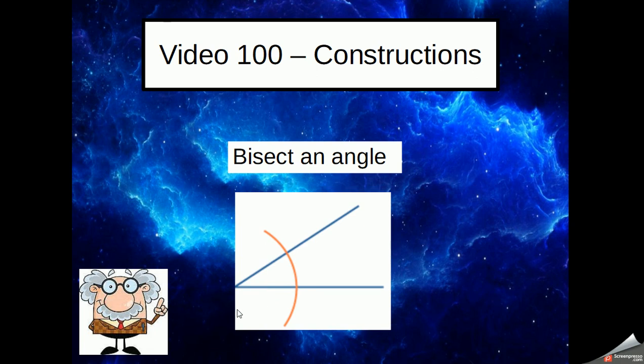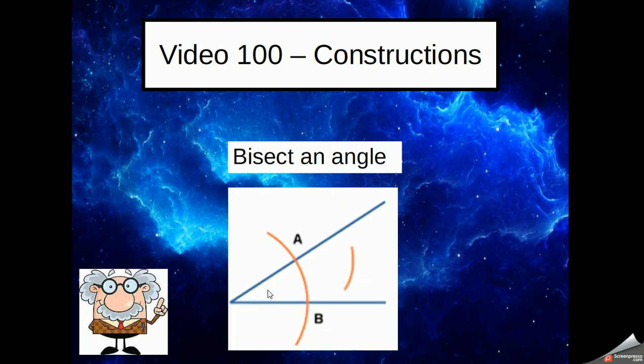Bisecting an angle means cutting the angle directly in two. So with this one, we've got an angle here. We set our compass to a moderate length and create an arc that cuts through both the lines that make up the angle. You then position it with the same distance on the compass. Don't change your compass.